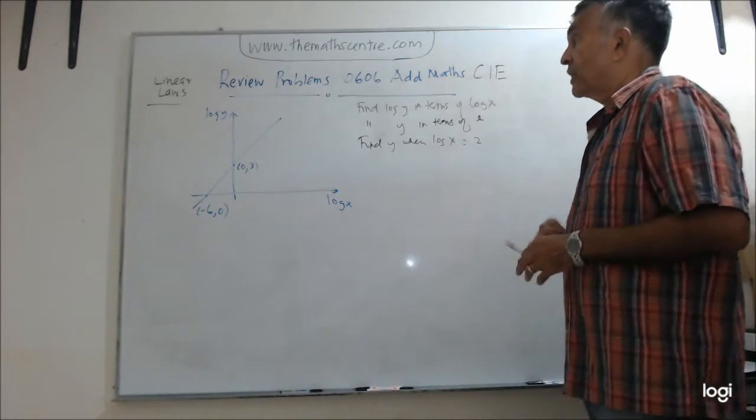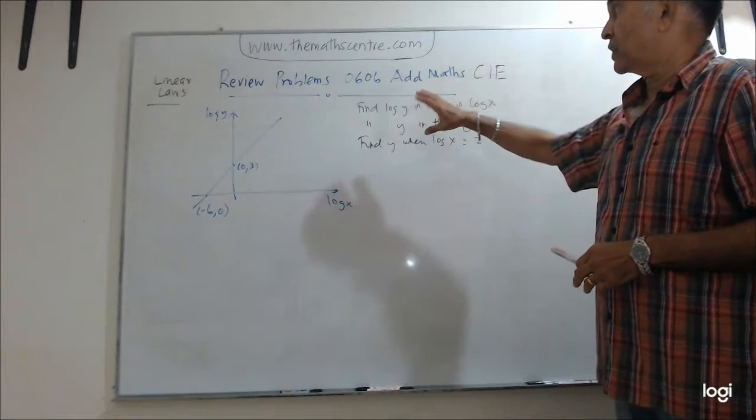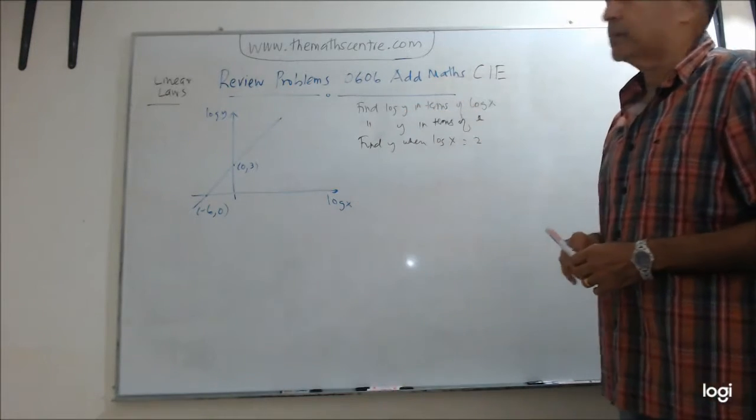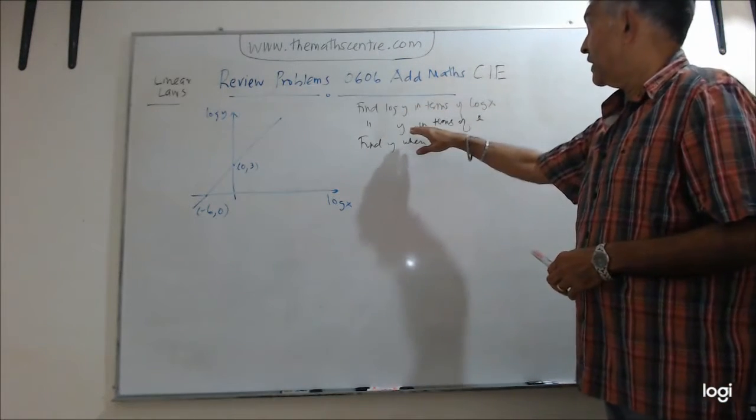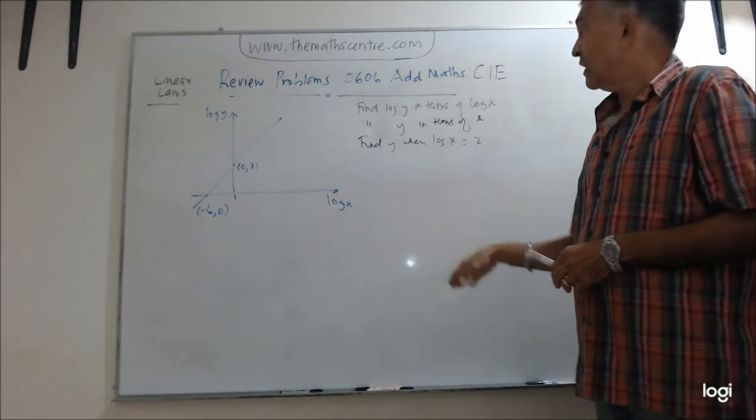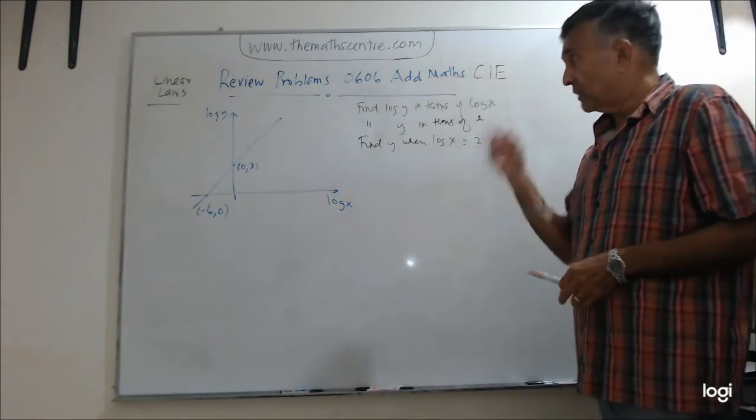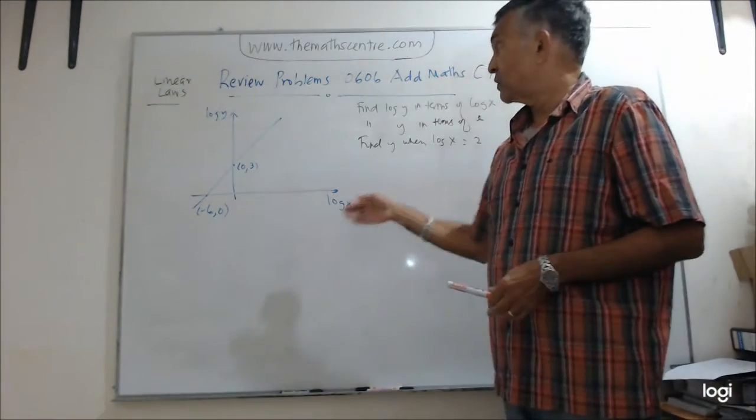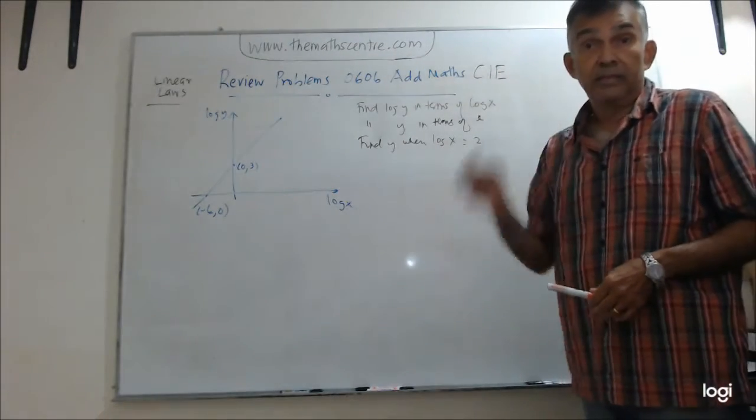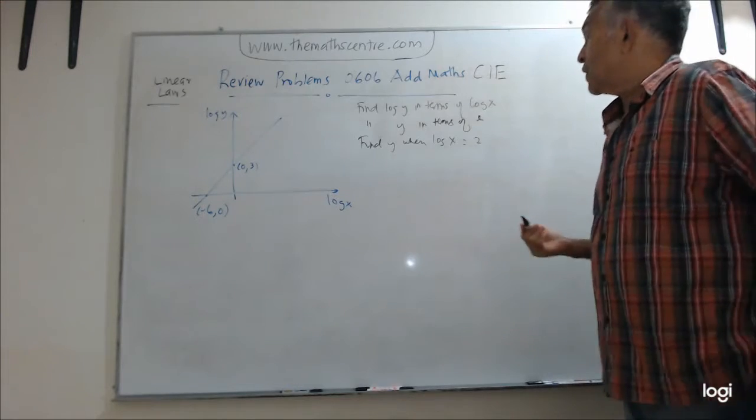Now that you know the story, what's the question? Find log y in terms of log x, then find y in terms of x, and then find y when log x equals 2. Okay, I think I don't have to say this, but I'll say it anyway. When you see log x, you know the base is 10.